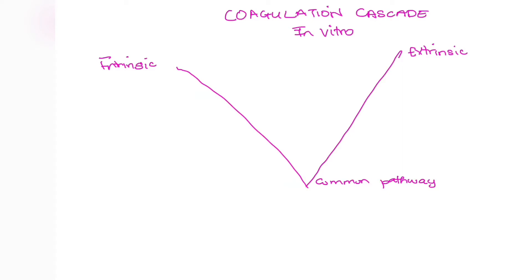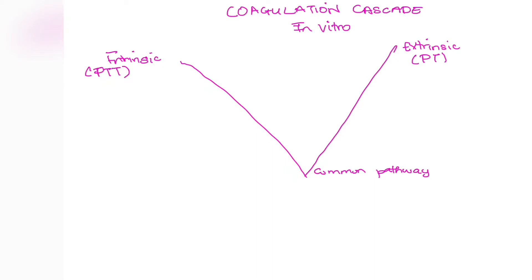The intrinsic pathway affects PTT time, and the extrinsic pathway affects PT time. PT and PTT are coagulation tests to ensure that coagulation is occurring in a stepwise process. They are recorded in seconds and tell which pathway has been affected and which factor is likely deficient.